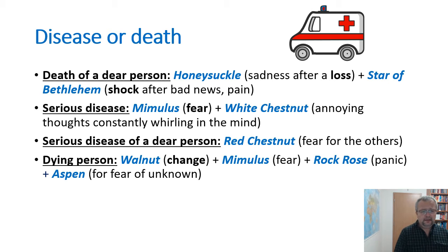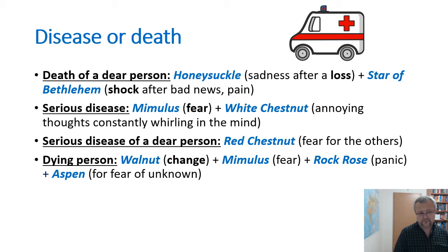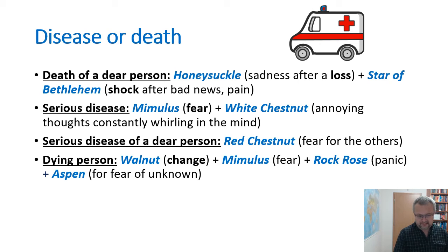When a serious disease is diagnosed, use Mimulus for fear and White Chestnut for annoying thoughts, and sometimes Rock Rose for panic. When a serious disease affects a dear person rather than oneself, Mimulus is replaced by Red Chestnut, which is the fear for other people. When somebody is dying, the combination includes Walnut for change, Mimulus for fear, and Rock Rose for panic — for example when the person is suffocating and panics that they will die. Rock Rose can significantly reduce this panic.